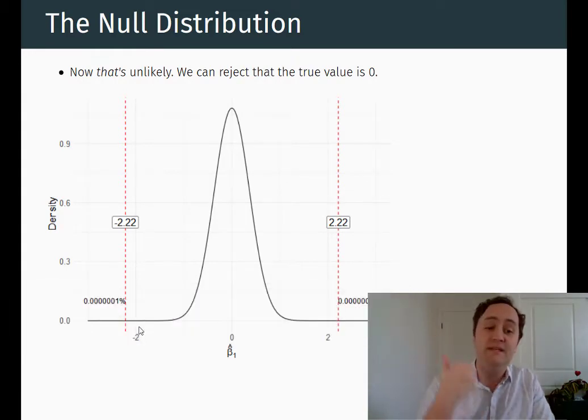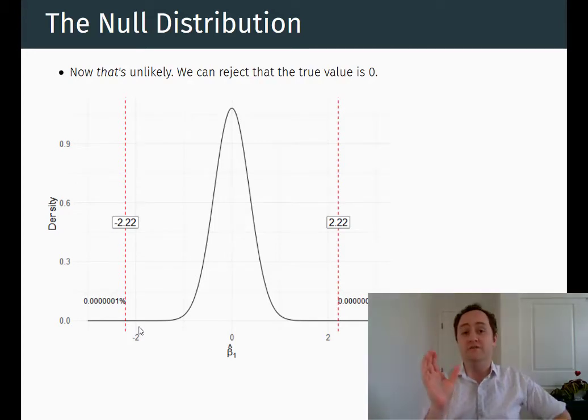So here is the null distribution if the truth is 0. So now I can go how far to the right do we need to go to get to our actual estimate of 2.22, and then on the other side to negative 2.22. And it turns out there is a very tiny fraction of the distribution outside of that range. So it is very unlikely that we would have gotten an estimate as weird as 2.22 or weirder, if indeed the true null was 0, if the true value was 0. So it's so unlikely that both the truth is 0 and that we got this estimate that they can't both be true, or it's very unlikely that both are true. So it's probably the true 0 that is false, leaving us with our estimate so we can reject the null of 0.